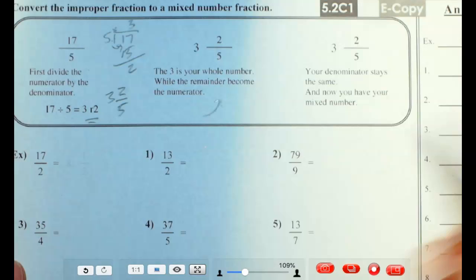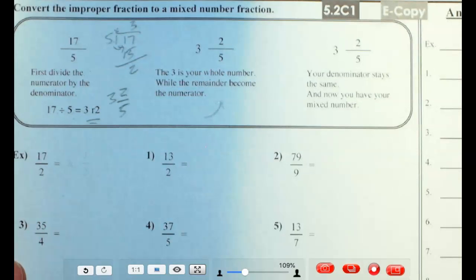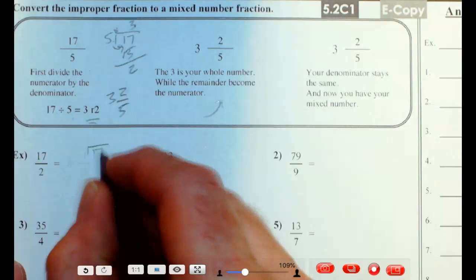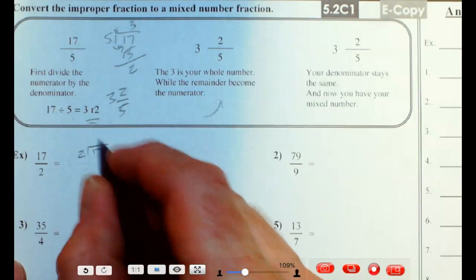All right, let's try a few of these. We have 17 halves. So 17 divided by 2, 17 divided by 2, goes in there 8 times.